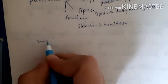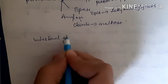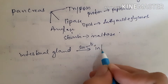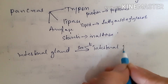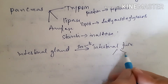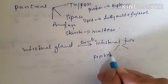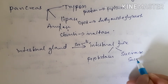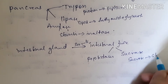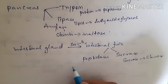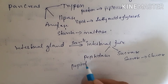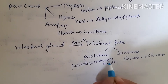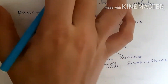Next we have the intestinal gland. The intestinal gland secretes intestinal juice, which contains two enzymes: peptidases and sucrase. Sucrase converts sucrose into glucose. Peptidases act on peptides and convert them into amino acids.